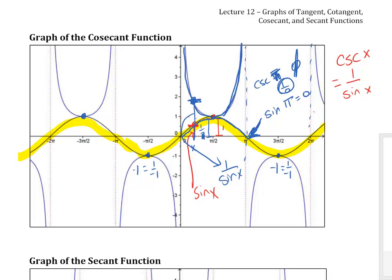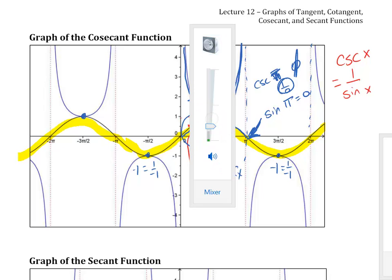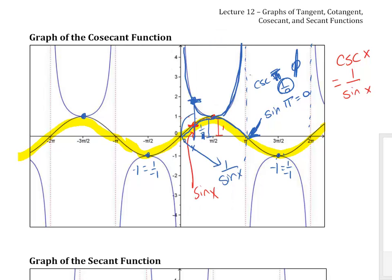So you can always figure out what the cosecant looks like by taking the sine function and then going to each of the highest and lowest points and drawing these big u's. And everywhere the sine function is 0 is going to be an asymptote.